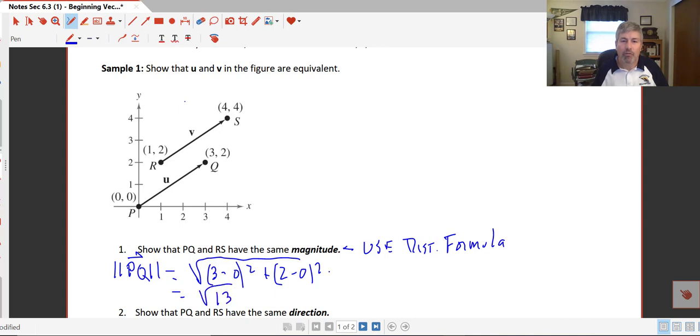Whereas the magnitude of vector V, or RS, is equal to the square root of 4 minus 1 squared plus 4 minus 2 squared. So 3 squared plus 2 squared, and again, we get the square root of 13. So their magnitudes are equivalent.